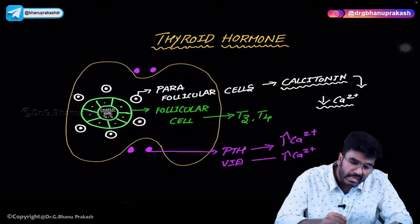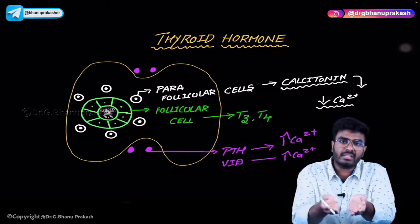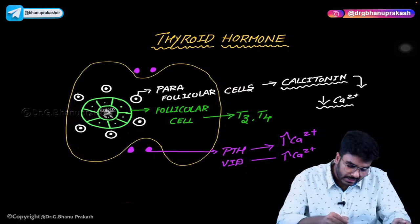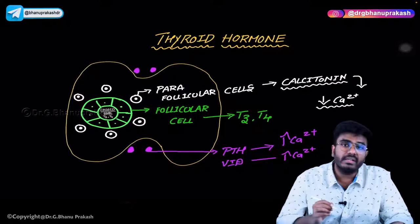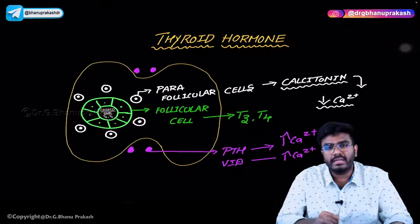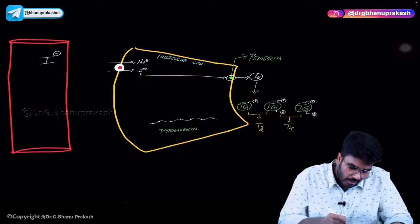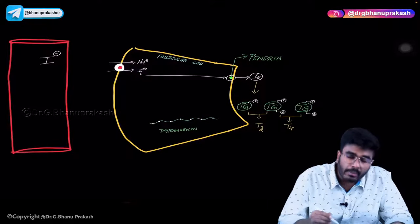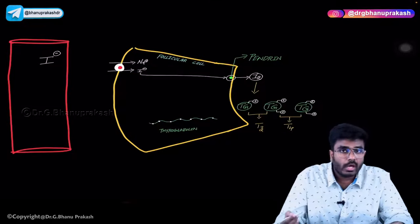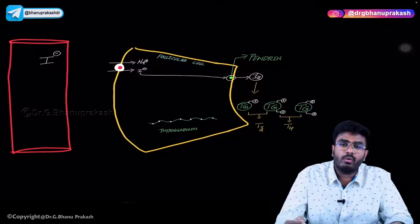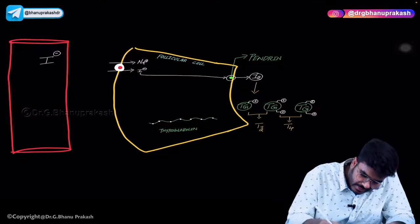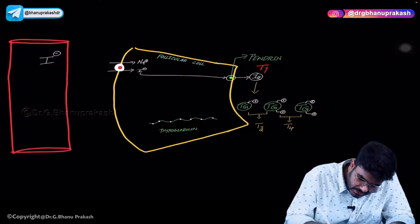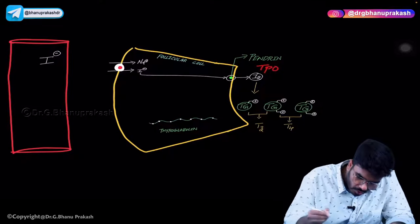All the follicular cells form a circle, and the space in the center is called the colloid — that is the place where T3 and T4 are stored. Now our iodides are coming into the colloid. When they enter, there is a very important enzyme present here called thyroid peroxidase.